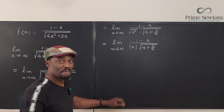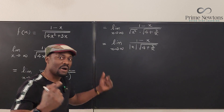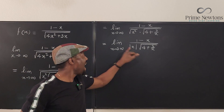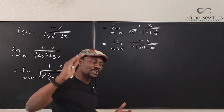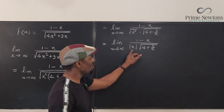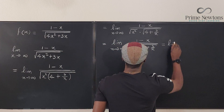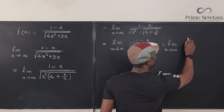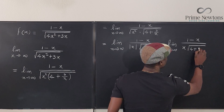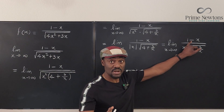Now we need to make a decision about |x|. Is x positive or negative here? Since x is approaching positive infinity, it is impossible for x to be negative — x has to be a positive number. So we can remove the absolute value bars and replace |x| with just x. This gives us (1 - x) over x·√(4 + 3/x).